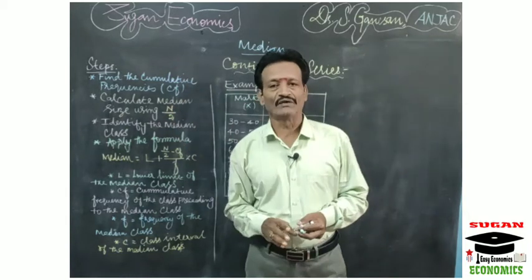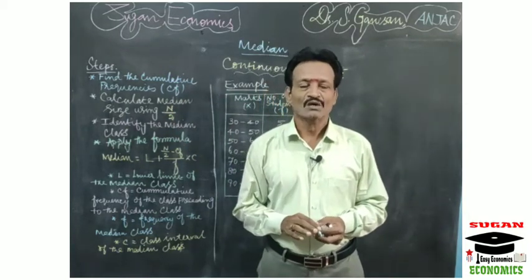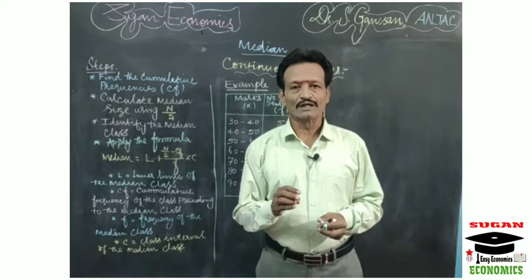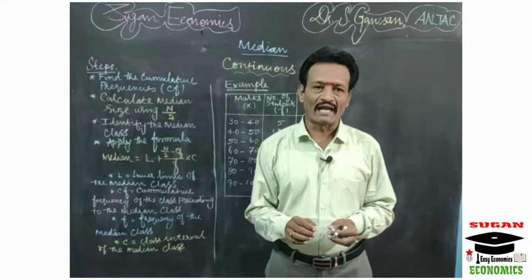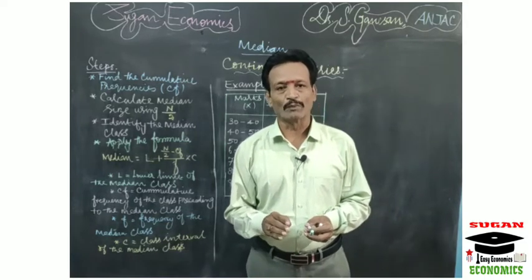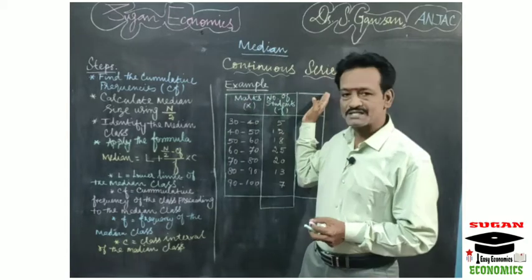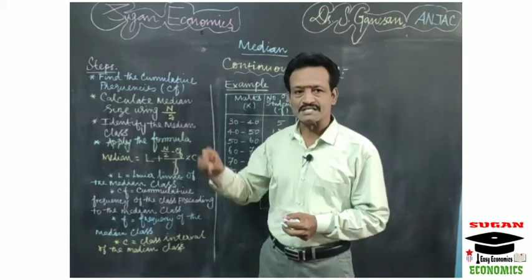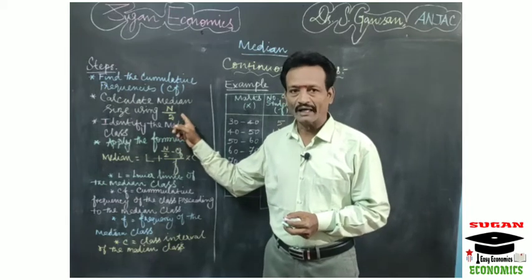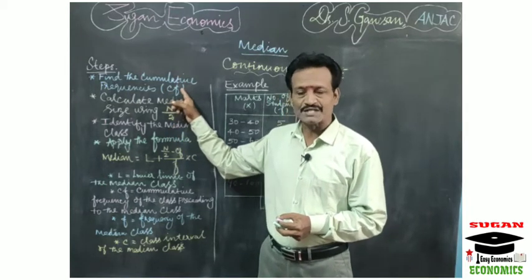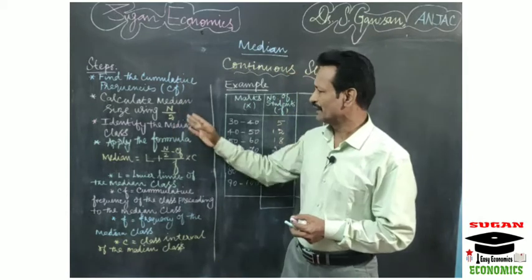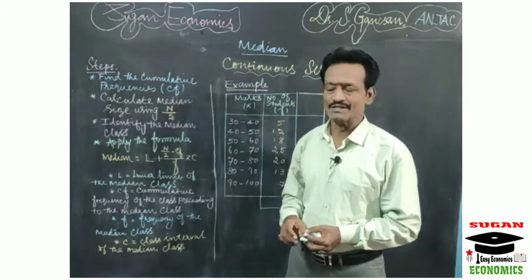After calculating the cumulative frequencies, we have to find out the median size. For individual and discrete series, the median size is n plus 1 by 2, but for continuous series, the median size is equal to n by 2 item. N is nothing but the total of frequencies.